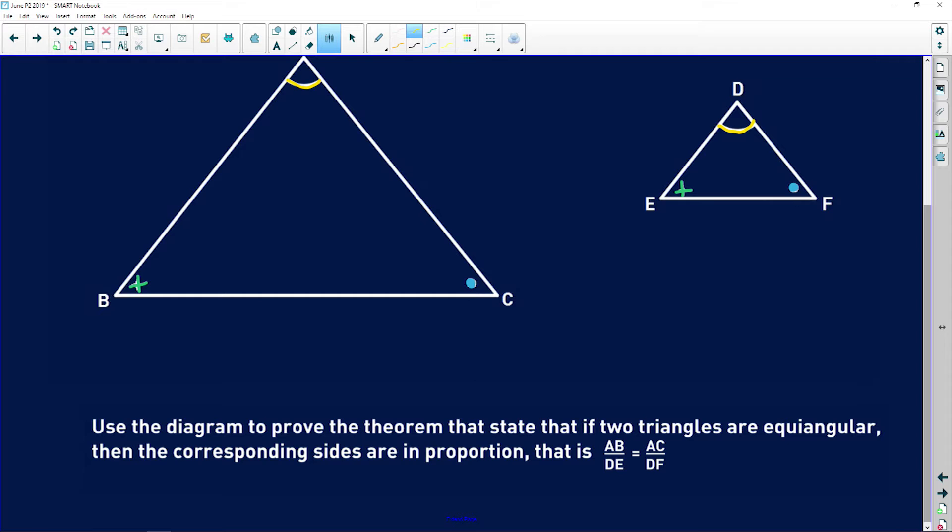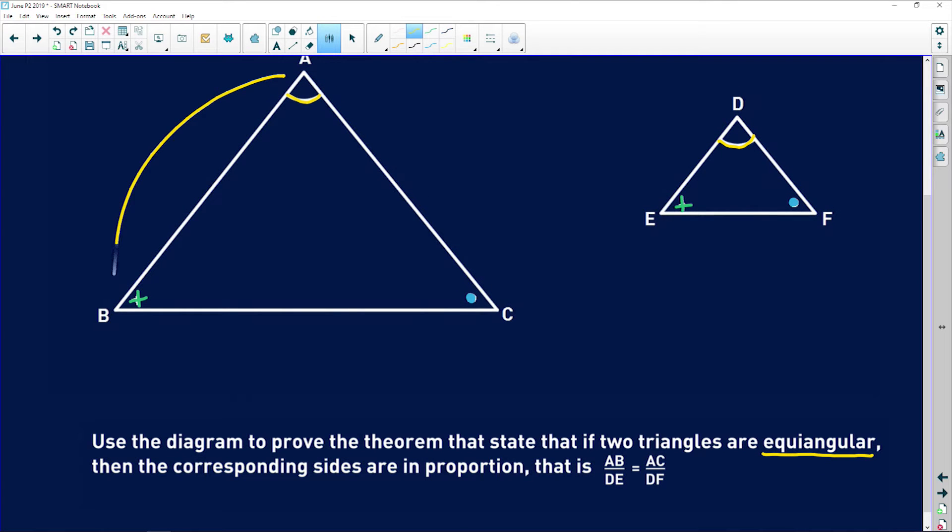Use the diagram to prove the theorem that states that if two triangles are equi-angular, as in all three pairs of corresponding angles are equal, then the corresponding sides are in proportion. That is, prove that AB over DE is equal to AC over DF.